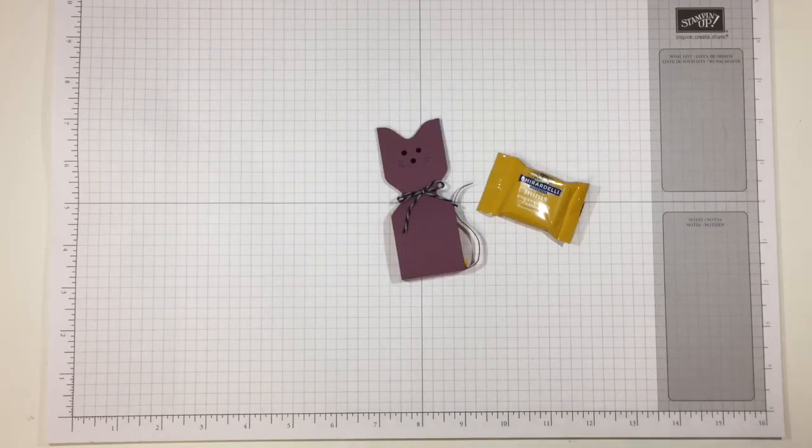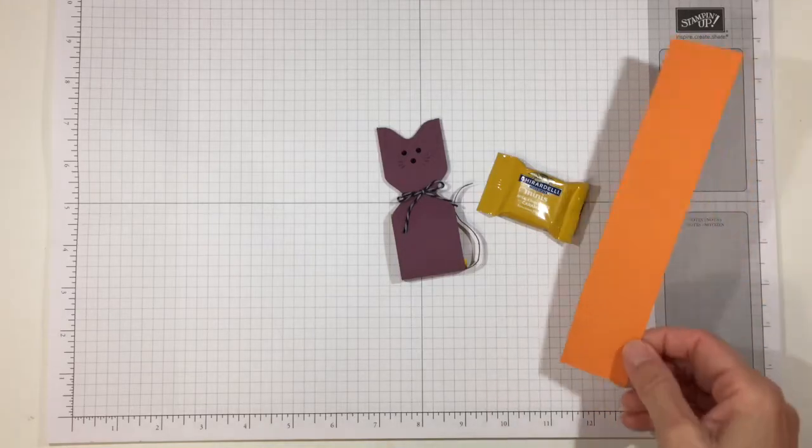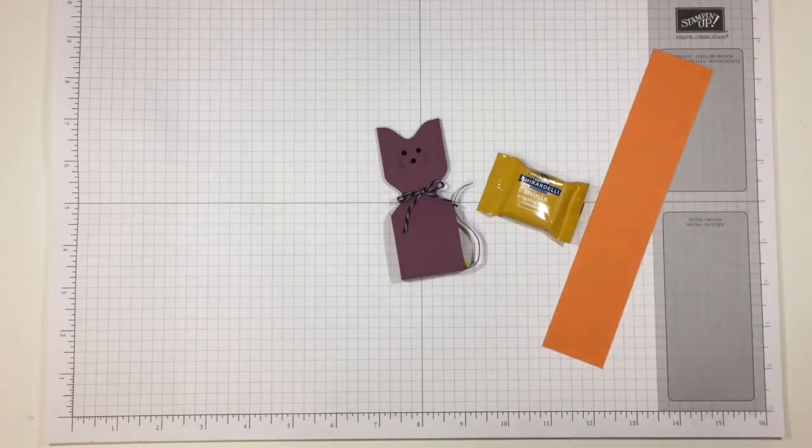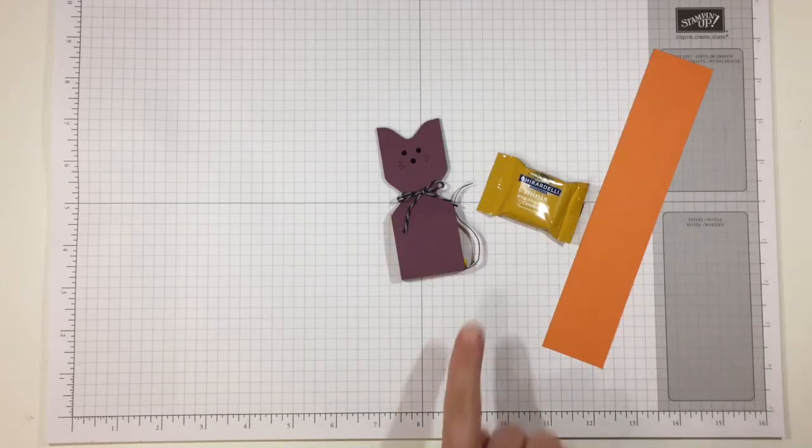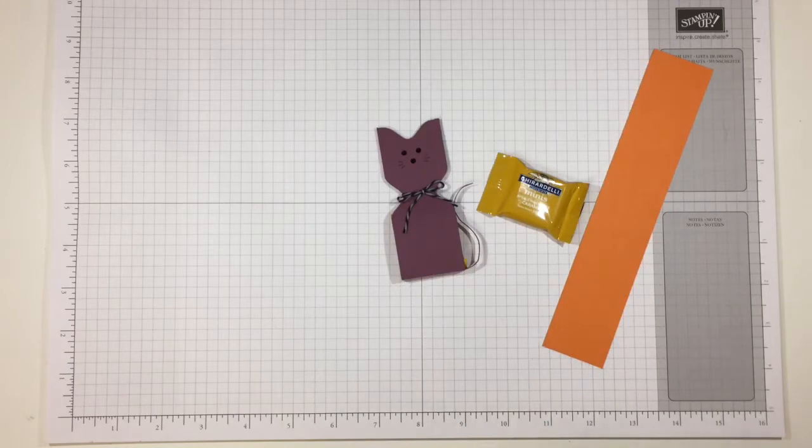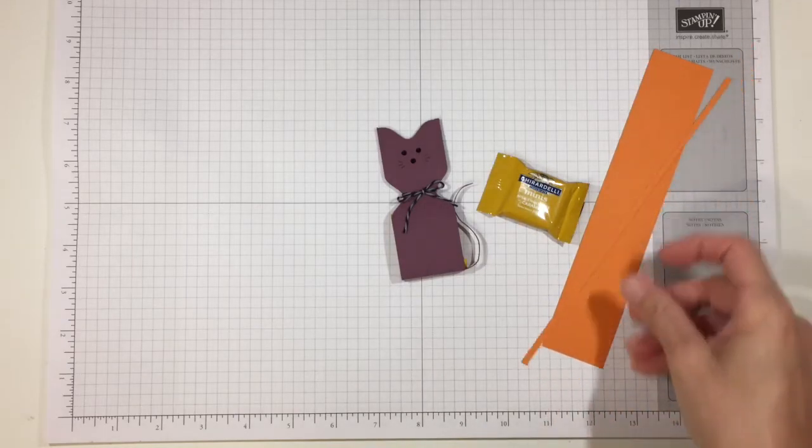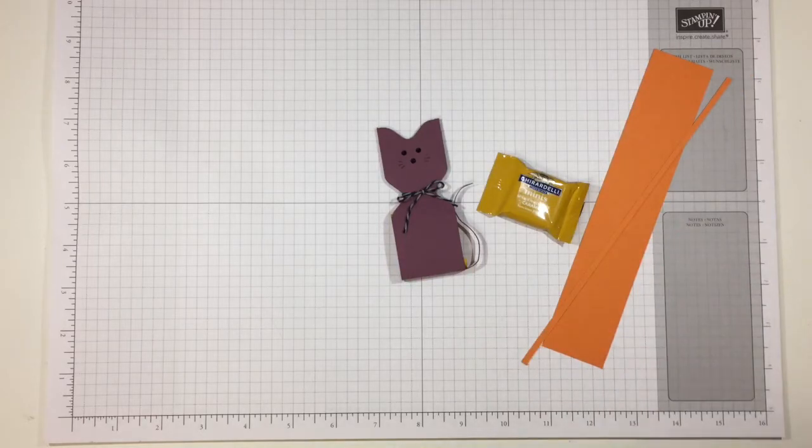He makes a very cute little favor. You just start with a piece of cardstock that is seven and three quarters inches long by one and a half inches wide, so seven and three quarters by one and a half. Then for his tail you just need about a four inch piece of coordinating or the same cardstock that is one eighth of an inch by four inches long.